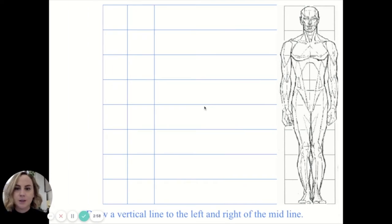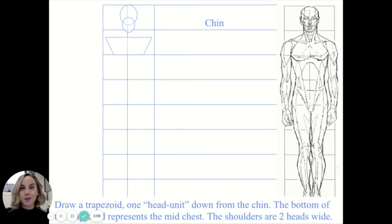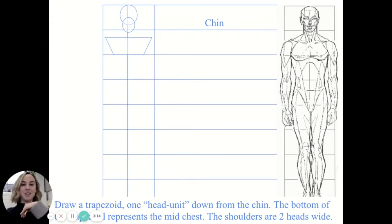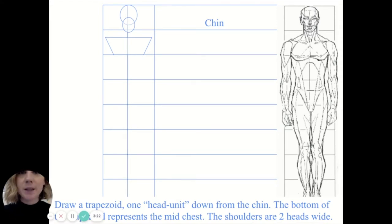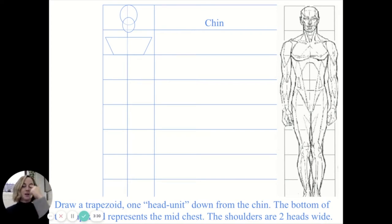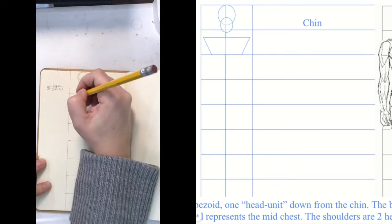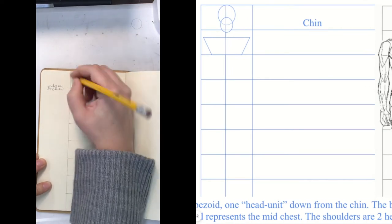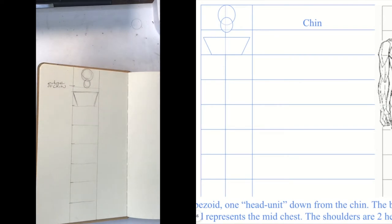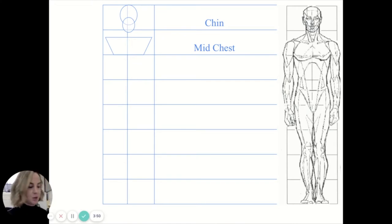Now we're going to go to the mid chest and start to develop our shoulders. When creating the mid chest area, a good note is that your shoulder width is the size of two heads placed side by side — that's how wide your shoulders are. This is really good to know when drawing a portrait, because sometimes we draw them too small or too large. Think about the length of your face and having two of those widths. I'm going to draw a triangular shape for the shoulders, leaving some room for the neck, and mark off that the mid chest goes there.